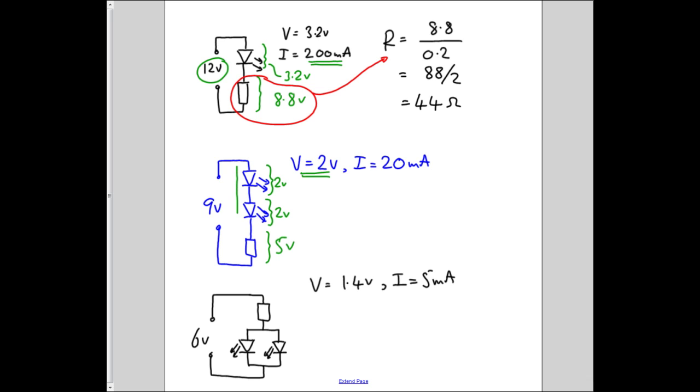There's 20 milliamps flowing through everything, because they're all in series, and therefore for the resistor, the resistor equation becomes R equals 5 divided by 0.02, because 20 milliamps in amps is 0.02 amps. So if we work that out, we get 5 divided by 0.02 is 500 over 2, which is 250 ohms.